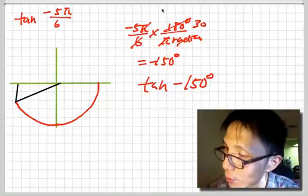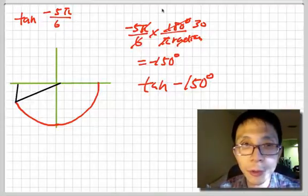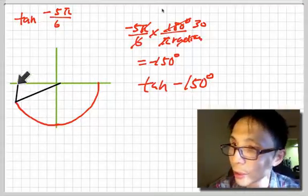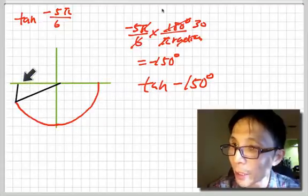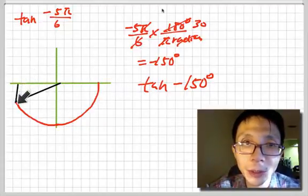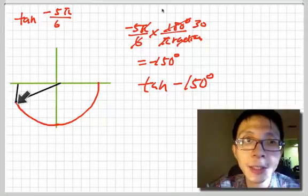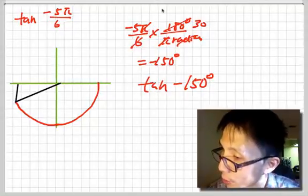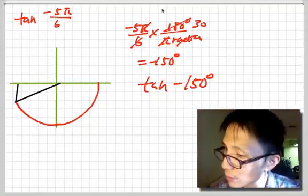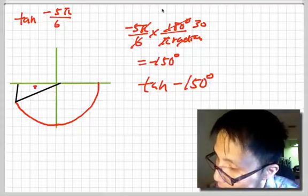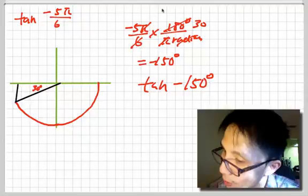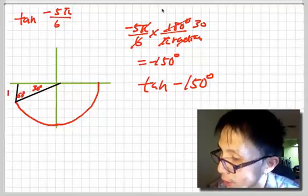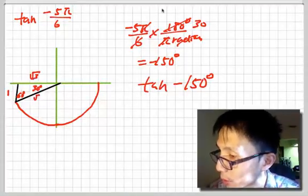So in this case, the reference angle has to be — well, we know the full circle is 150 degrees. From here to here it's 180 degrees, but we're only going to 150 degrees. So that would be 180 plus 150, leaving 30 degrees here. So if that's 30 degrees, this must mean 1, this must mean 60 degrees, this must mean square root of 3, and this one is 2.